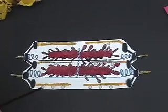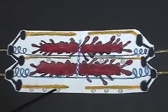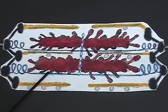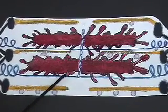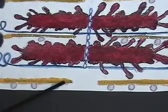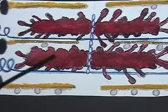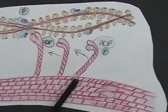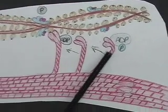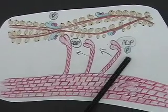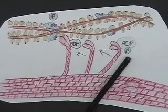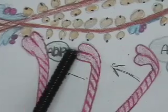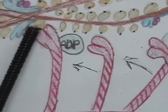Calcium moves over the thin filaments and binds to troponin. This pulls tropomyosin off of the active site on the actin. The head of the thick filament is in the high energy state and has ADP and phosphate attached. This head then binds with the exposed active sites on the thin filaments, forming a cross-bridge.